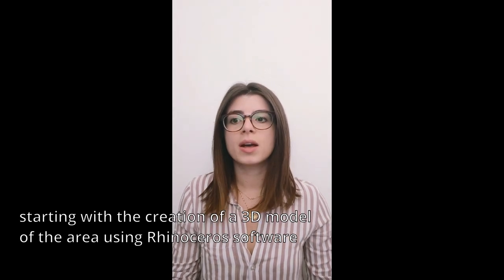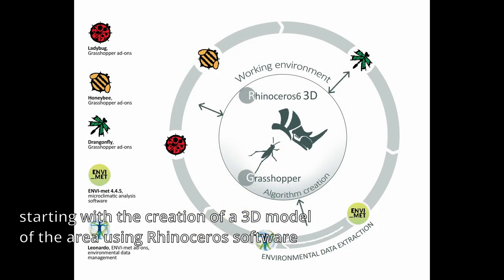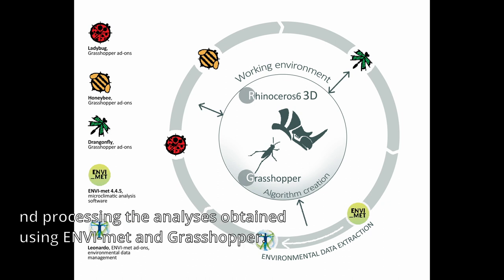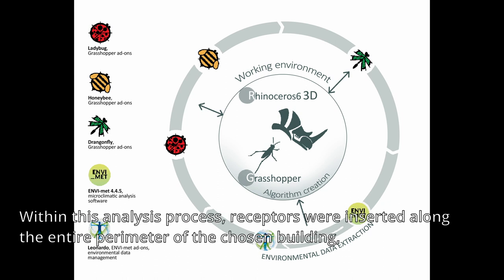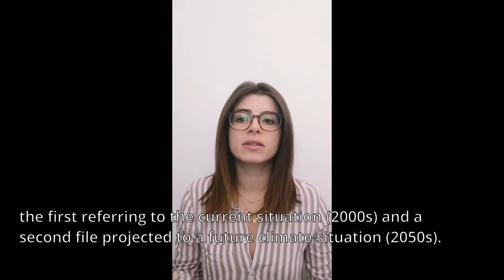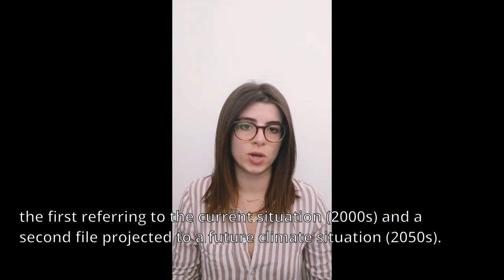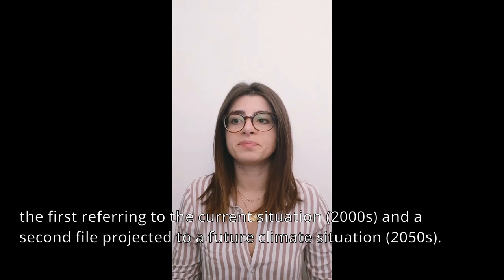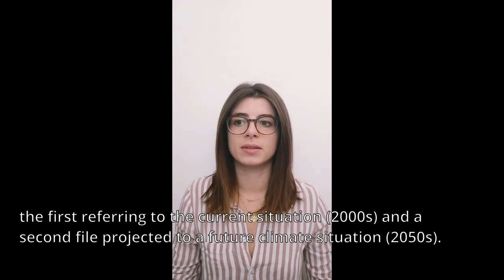The microclimatic analyses were carried out using Envi-met software, starting with the creation of a 3D model of the area using Rhinoceros software and processing the analysis obtained with Envi-met and Grasshopper. Within this analysis process, receptors were inserted along the entire perimeter of the chosen building, which made it possible to create two site-specific climate files: the first referring to the current situation, and the second projected to a future climate situation.